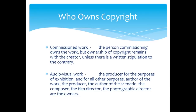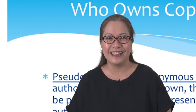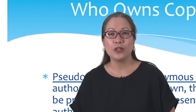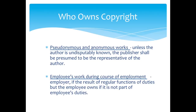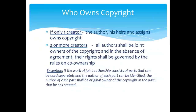If the work is commissioned, the person commissioning the work will own the work, but the ownership of the copyright remains with the creator, unless there is a written stipulation to the contrary. For audiovisual work, the copyright is owned by the producer for purposes of exhibition, but for all other purposes it is owned by the author, the producer, the author of the scenario, the composer, the film director, the photographic director — all together as co-owners. If the work is anonymous, the publisher shall be presumed to be the representative of the author. For employees that produce material during the course of their employment, the employer will be the owner of the copyright if the material is the result of the regular functions of that employee.